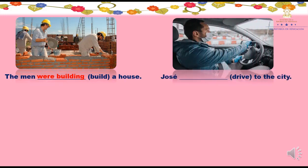The next: José ___ (drive) to the city. Si estamos hablando en singular, ¿cómo nos quedaría? Was driving. Was porque hablamos en singular. Y al verbo drive, si recuerdan, los que terminan en e se les quita la e para poder agregar -ing. José was driving to the city. José estaba conduciendo a la ciudad.